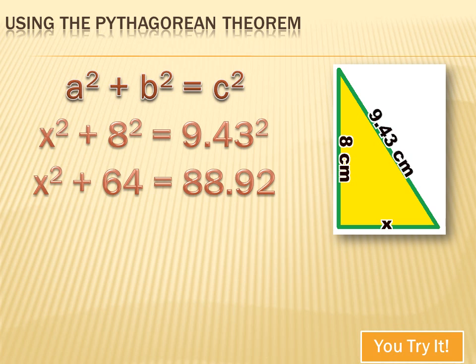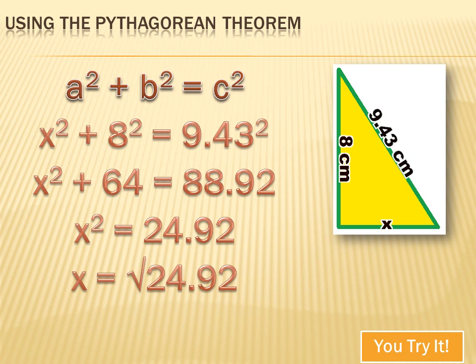x squared plus 64 equals 88.92. If I subtract 64 from both sides of the equation, x squared equals 24.92. And x equals the square root of 24.92. Now 24.92 is not a perfect square, but it's very close to the square root of 25. Since the square root of 25 is 5, x equals approximately 5 centimeters.